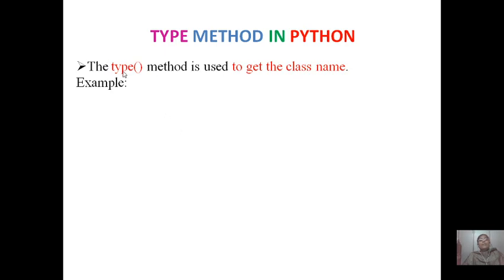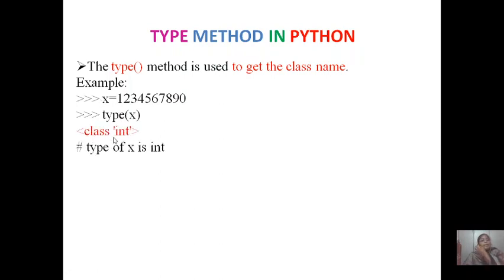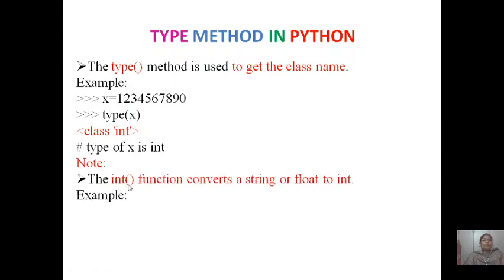There is a method called type in Python. Using this method you can get what kind of a class it is. For example, x is containing the number 1234567890, and you are using type of x. When you set this one, automatically it will show the class is integer class. That means x is containing an integer data. The int function will convert a string or a float into an integer. For example, int of '100', this is actually string because it is enclosed in single quotations. It will be converted into a number 100 which is an integer number.